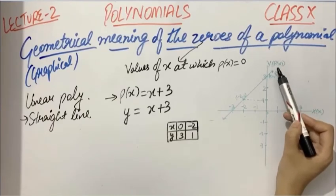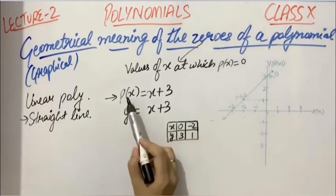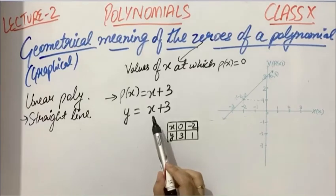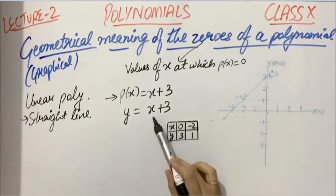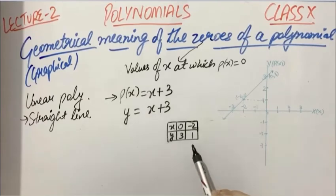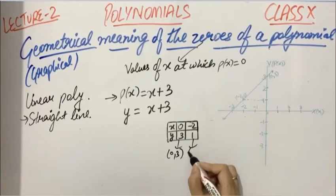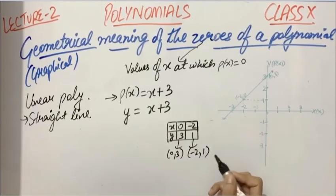That's why I've taken this as y equals P(x). If you put x as 0, y would be 3. If you put x as -2, y value would be 1. So we have the point (0,3) and this is (-2,1).